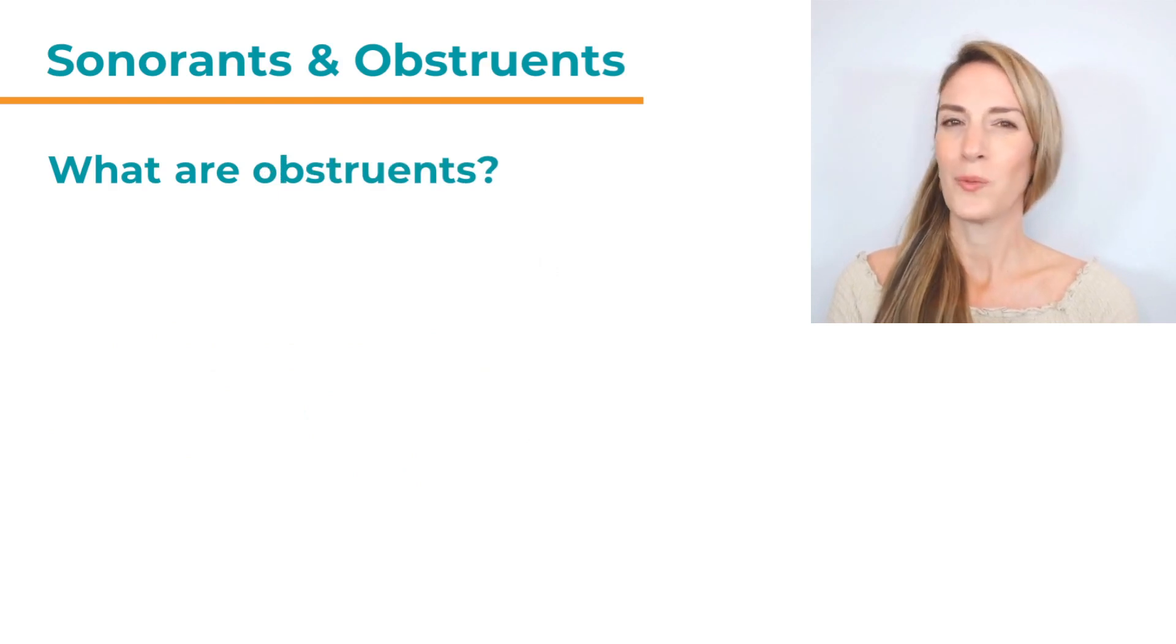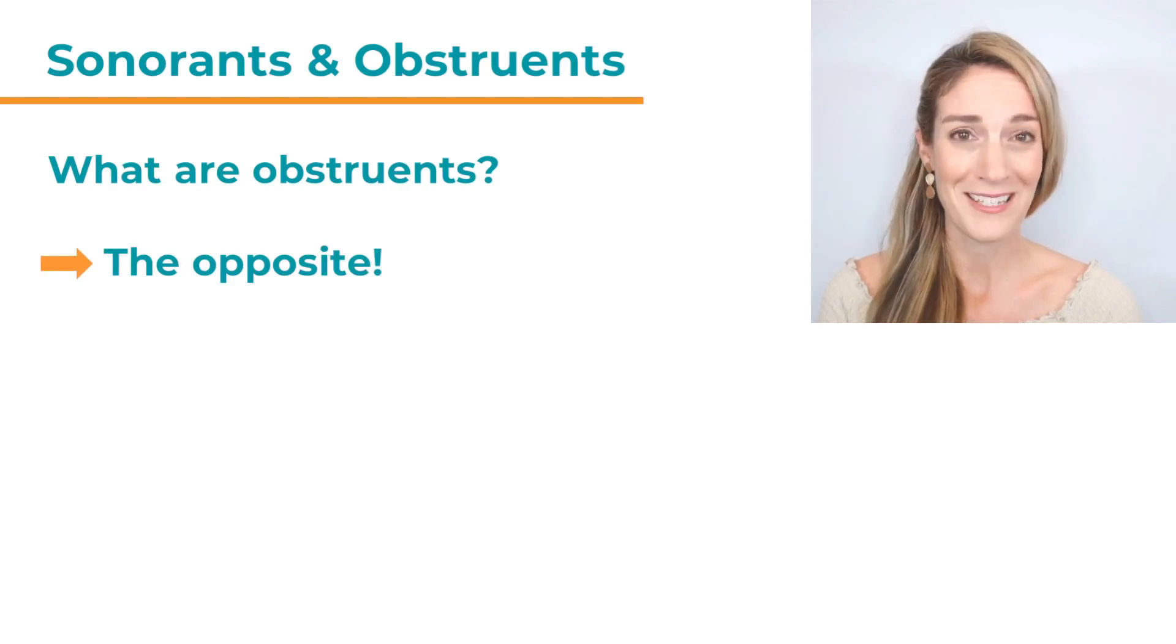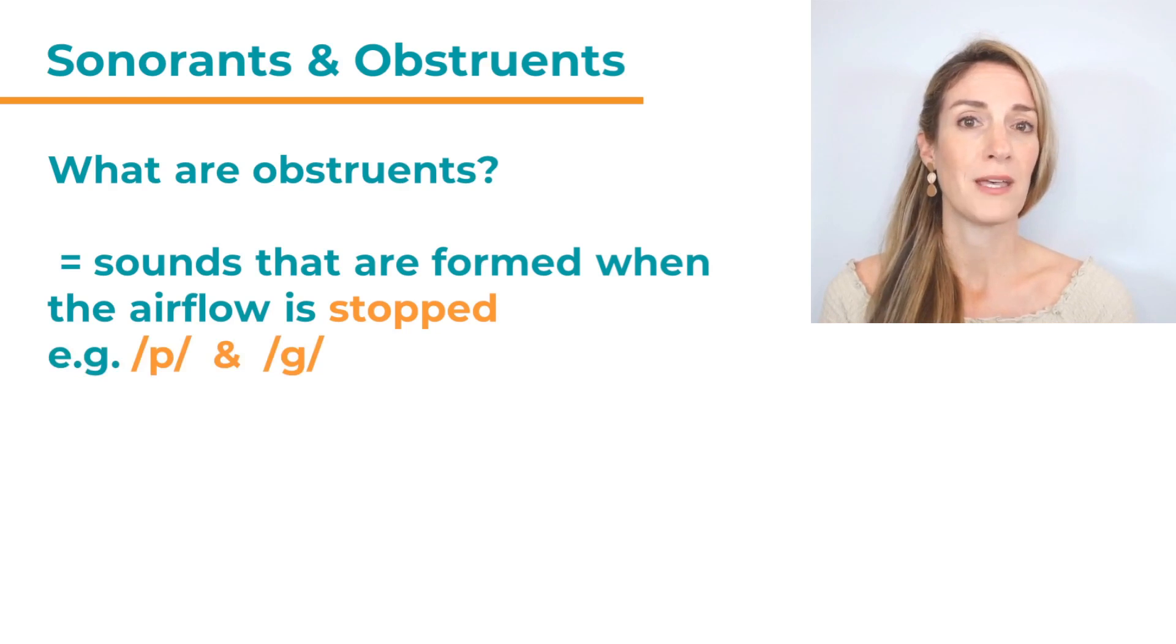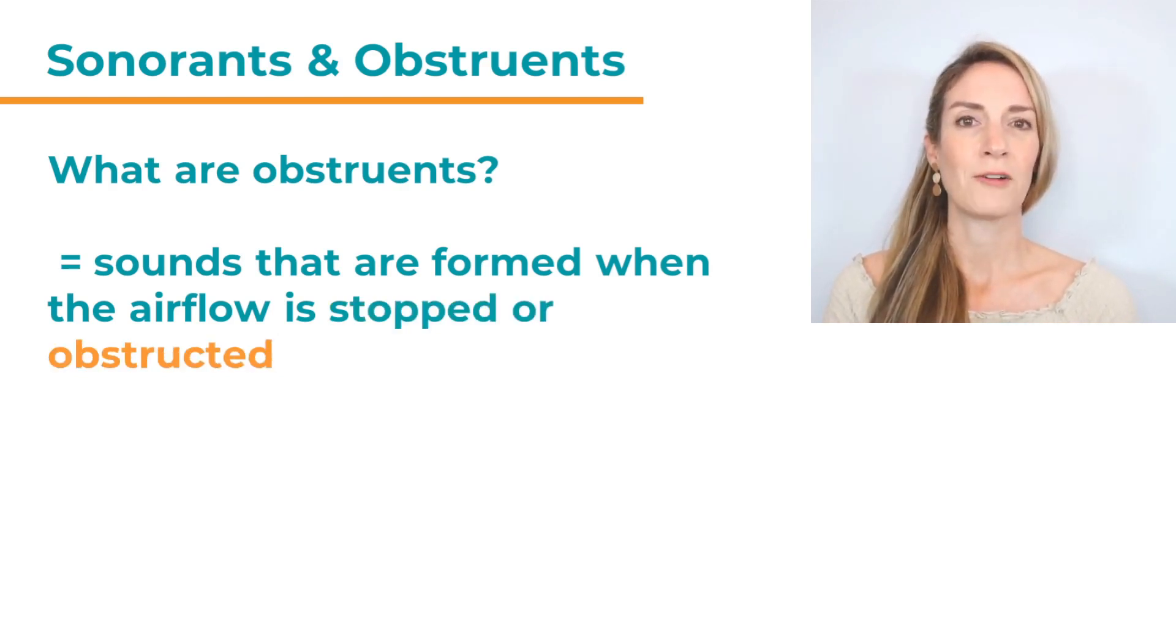Now, what about obstruents? They are exactly the opposite. So, these are sounds that are formed when the airflow is stopped, for example p or g, or when the airflow is obstructed or restricted in some way and we can hear the air turbulence.